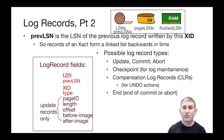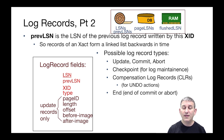The update log record has an LSN, a PREVLSN, and a transaction ID. It's got a type, which says what kind of log record it is. And then, because it's an update record, it's got information to allow us to do redo or undo: the page ID involved, a location on that page which is an offset and a length, and then the before and after image of that offset-length range of bytes on the page. That will allow us to do redo or undo.